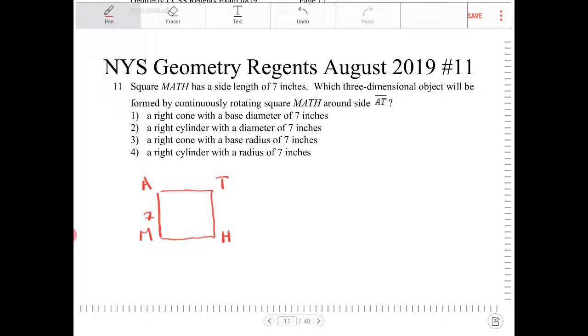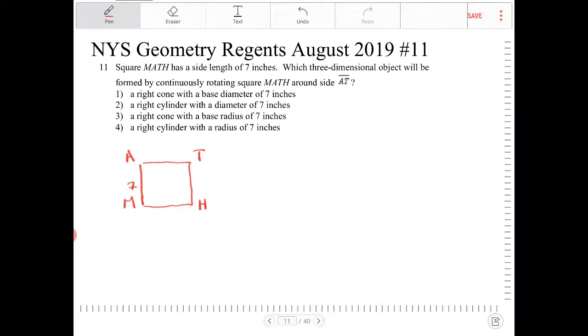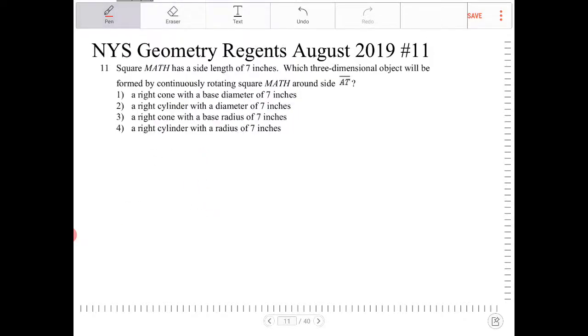What happens when we rotate this square over side AT? Actually, I want to draw this giving myself a little more room here. So again, I have A, T, M, and H. And this is side length seven.